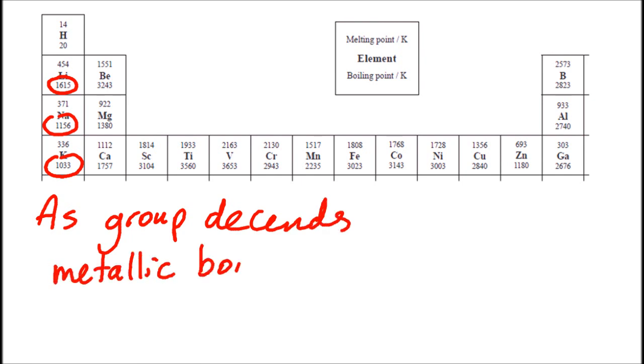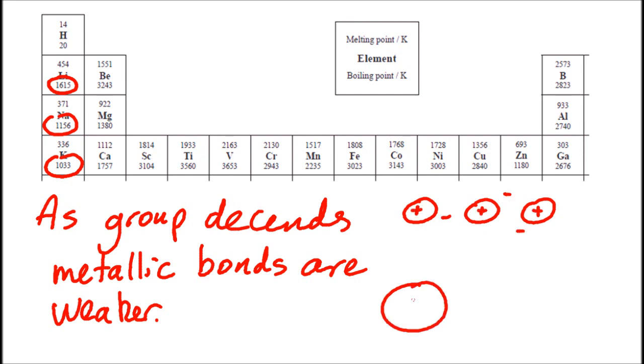So the metallic bonds must be getting weaker as the group descends. Metallic bonds - positive metal ions in a sea of electrons. So if I sketch out a little version of lithium at the top and sodium at the bottom,